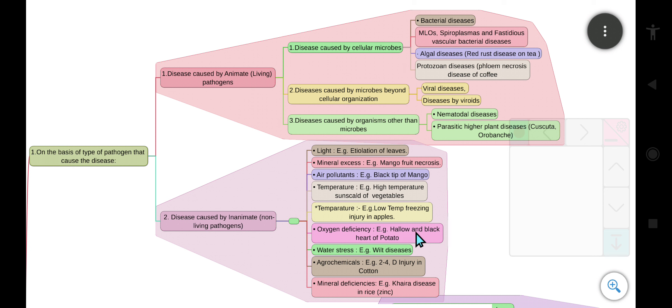And oxygen deficiency, its example is hollow and blackheart of potato. And water stress, its example is wilt diseases. And some agrochemicals, example is 2,4-D injury in cotton. And mineral deficiencies, its example is Khaira disease in rice because of the deficiency of zinc.